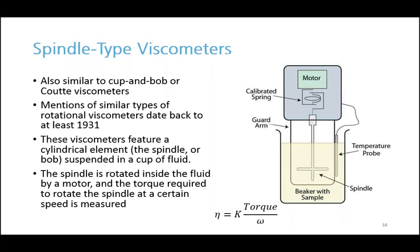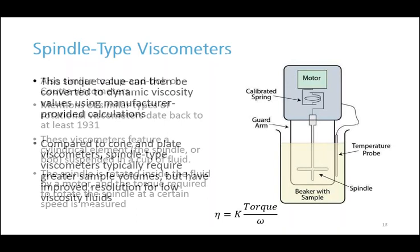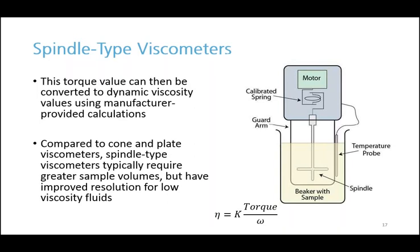Because there are many different spindle-type viscometers, this constant k can vary from one to another. Compared to cone and plate viscometers — which we'll be discussing next — spindle-type viscometers typically require larger sample volumes, but they have significantly improved resolution for low viscosity fluids because they have larger surface areas.